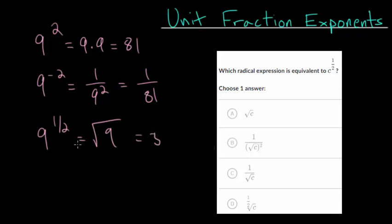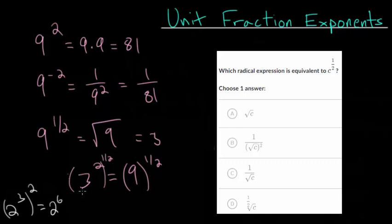But to make sense of this, you could start with the fact that 3 squared is equal to 9. And if I raise both sides of this equation to the 1 half power, then here I have an exponent to an exponent. And remember that rule that if you have 2 to the third and you raise it to the second power, that an exponent to an exponent we just multiply.